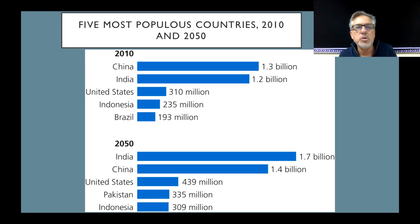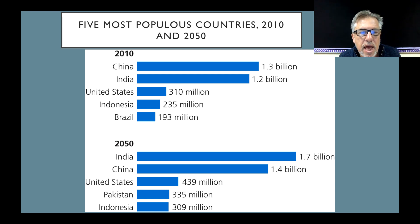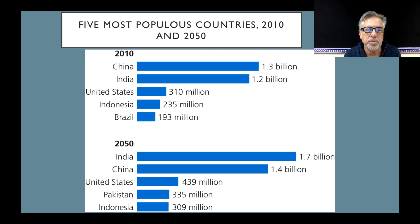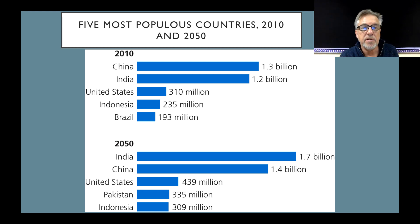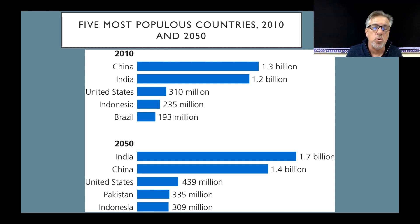The five most populous countries in 2010 were China, India, the United States, Indonesia, and Brazil. Predictions for 2050 are India to overtake China, the United States still in third place, Pakistan to overtake Indonesia, and Indonesia in fifth place. Brazil is currently at or very close to zero population growth, which is itself an amazing story. However, Brazil continues to be very poor, and as we'll see later, poverty and high fertility go hand in hand.